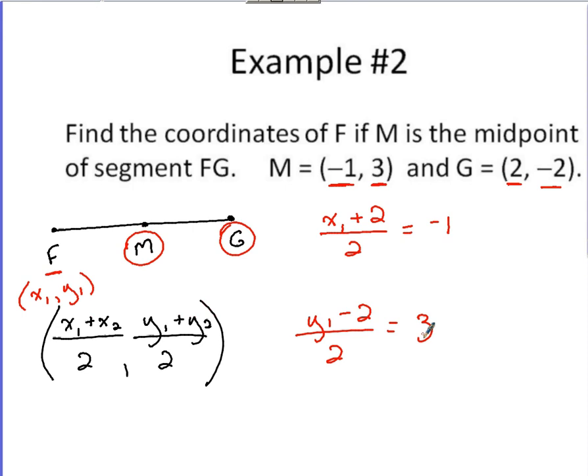So now I've got a couple equations where if I solve, I can figure out my ordered pair that represents F. I'd have my x sub 1, I'd have my y sub 1. So solving, multiply 2 over here, get negative 2. You get negative 2 over here, you're subtracting 2 over, x sub 1 is going to be negative 4. This equation, multiply 2 over, gives you 6. You'd be adding that 2 over, so y sub 1 would be 8. Coordinates for F would just be negative 4 and 8.